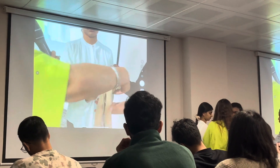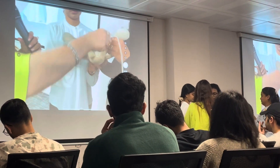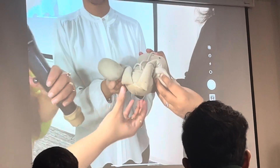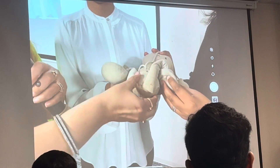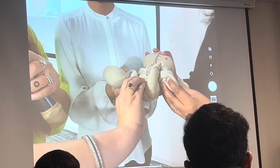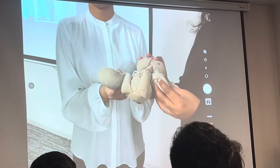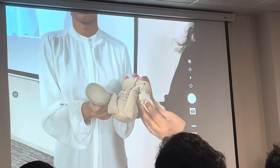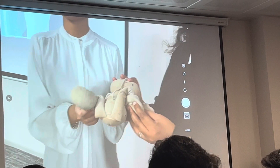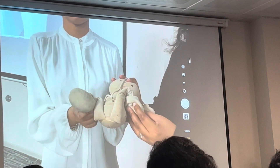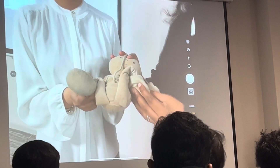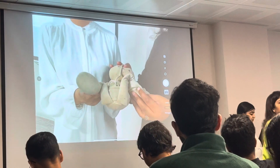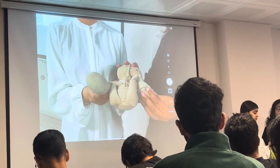E is for Enter. I am going to take my hand inside the pelvis and rotate the shoulder, then try to deliver. I am taking my hand inside and rotating the shoulder. The image you will see is the hand inside trying to rotate the shoulder. This is called the Wood's corkscrew maneuver.